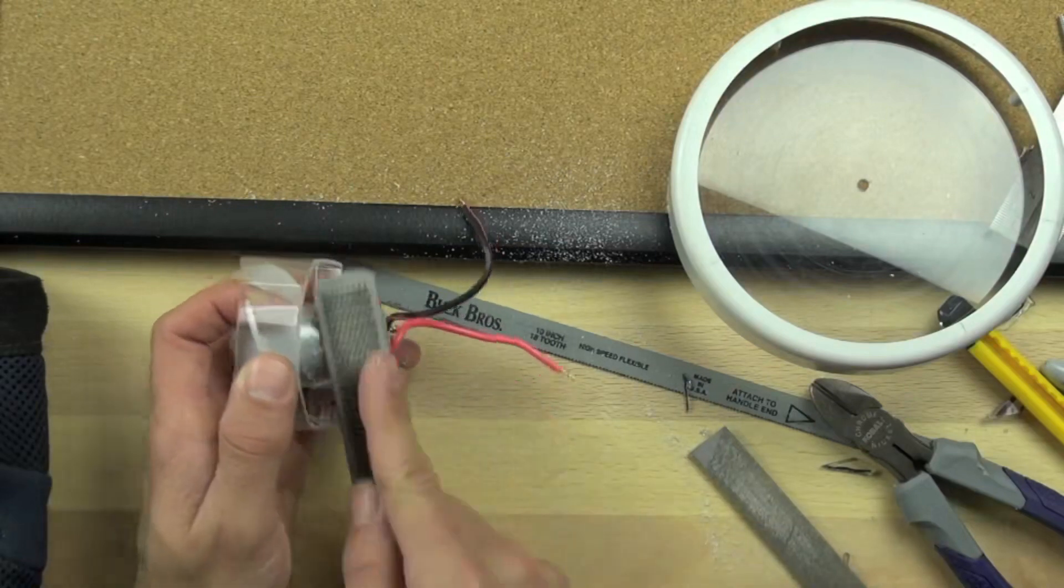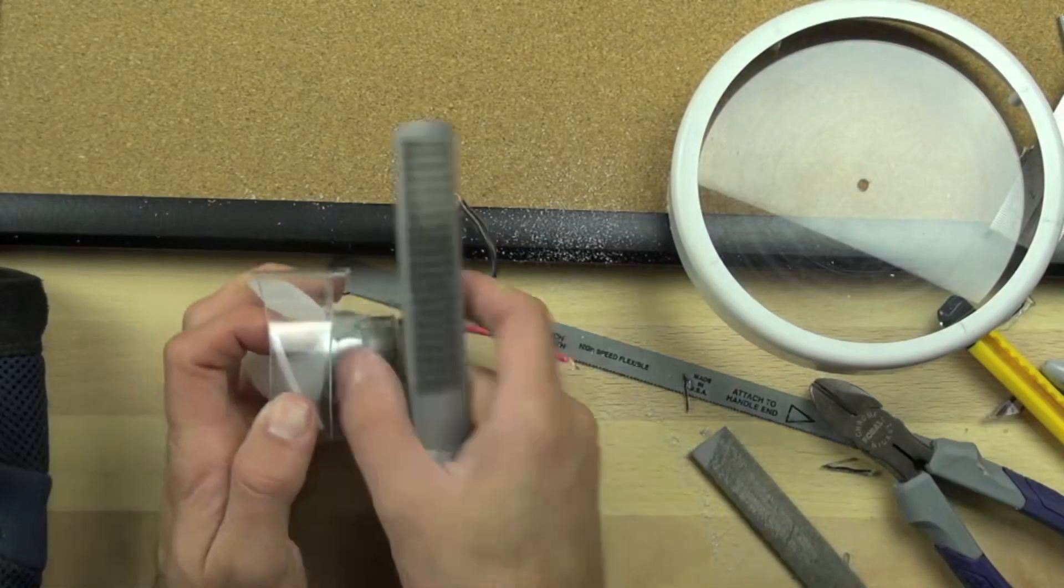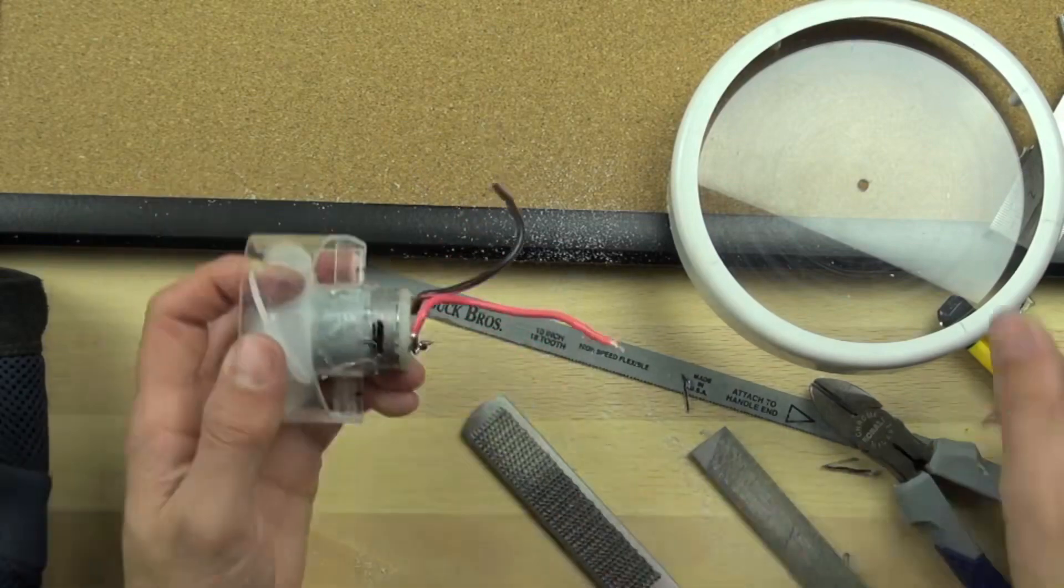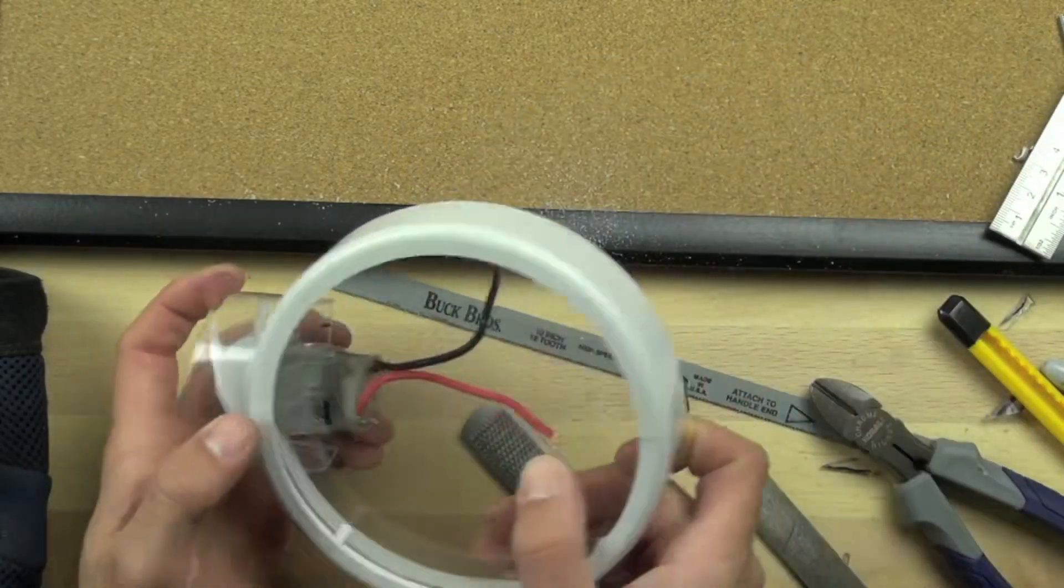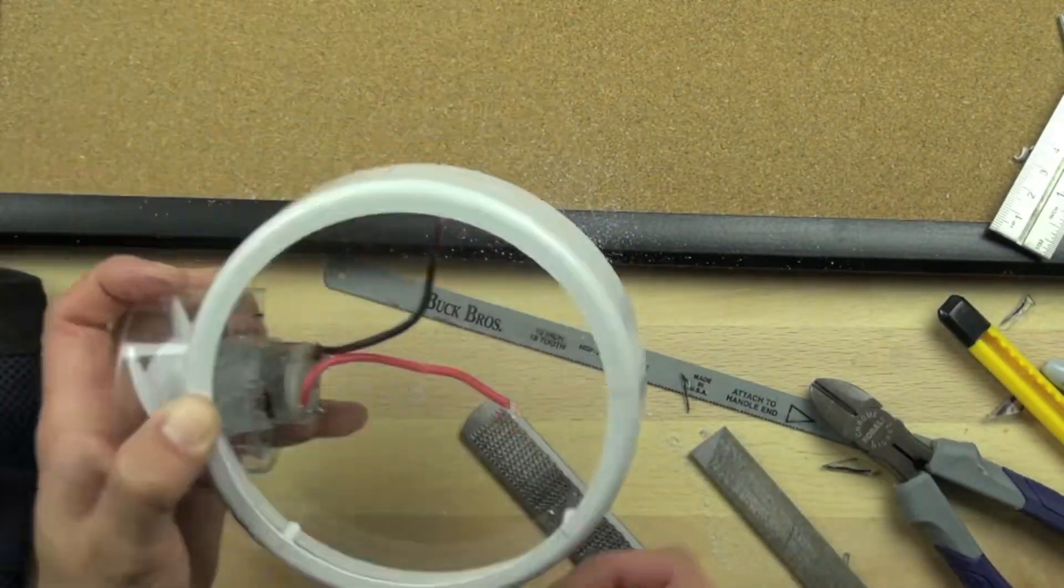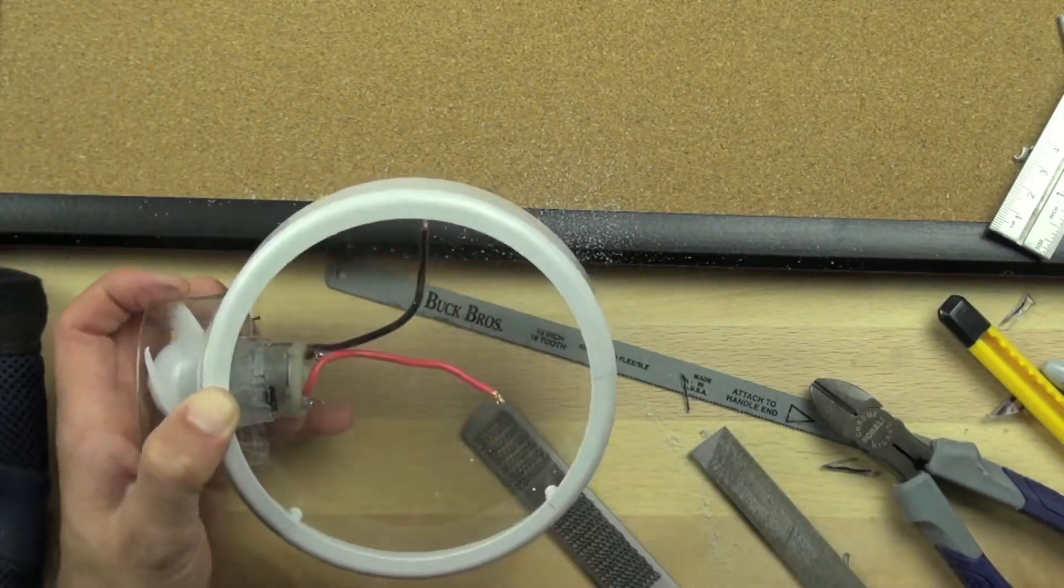There are a couple little nibs, plastic nibs, left from when we cut off the vanes using our nipper pliers, so we're just filing those down so that the motor will sit flush with the acrylic, or I should say with the Lexan.